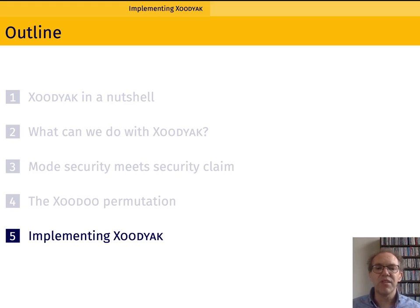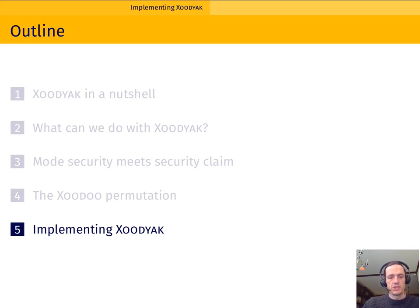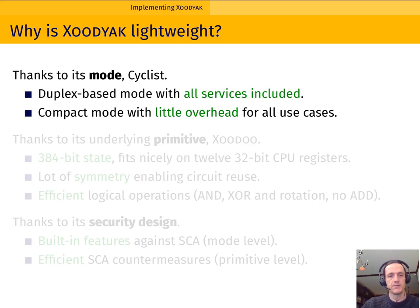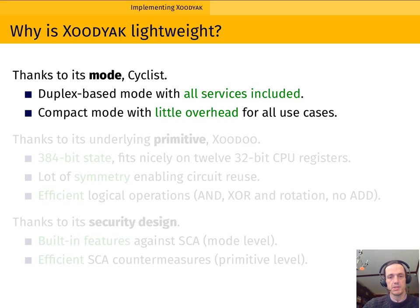I'm now going to talk about the implementation aspects of Zodiac. Before giving performance figures, let me highlight some advantages unique to Zodiac for lightweight applications. When designing a lightweight application, you must look at the cost of the whole application, not just a single primitive. One big advantage of using cyclist — the mode underlying Zodiac — is that it provides all symmetric cryptographic services you would need: not only authenticated encryption, but also hashing, full session support, key derivation, and more. We designed cyclist to be as compact as possible, enabling all use cases with very little overhead.